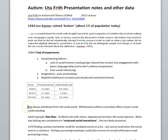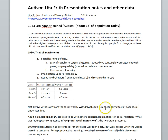Frith makes the point that autistic individuals are not always withdrawn from the social world. That has sometimes been portrayed in media and movies as a complete disconnection from all social engagement, but she suggests that social withdrawal could be a secondary effect of poor social understanding. The idea is that the withdrawal is not the principal feature of the disorder — rather, it is a difficulty in social understanding. Because children have difficulty understanding other people, people become less interesting or perhaps even aversive, and so they withdraw.